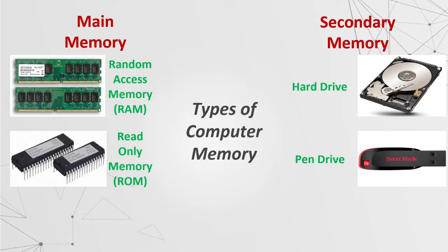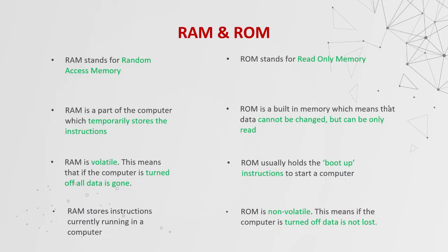Types of computer memory. Main memory consists of random access memory and read-only memory. Secondary memory consists of hard drive and pen drives. RAM stands for random access memory. RAM is a part of a computer which temporarily stores the instructions. RAM is volatile, which means that if the computer is turned off, all data is gone. RAM stores instructions currently running in the computer.